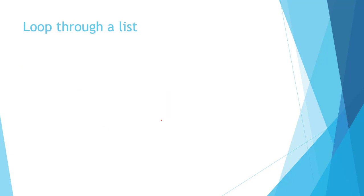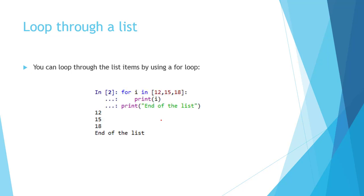Next is looping through a list. We can loop through the list items using a for loop. Using an iterator variable, we can easily print our list. For example: for i in list, print i. So i will get the value 12, then 15, then 18 — all the elements in the list are printed.